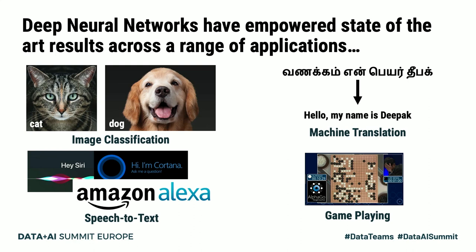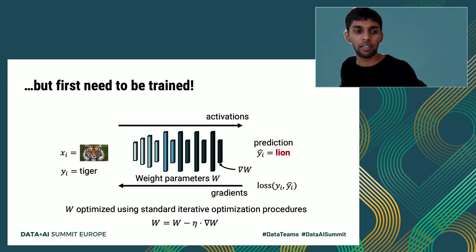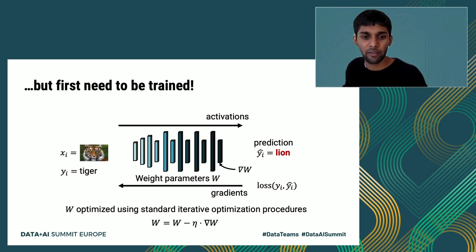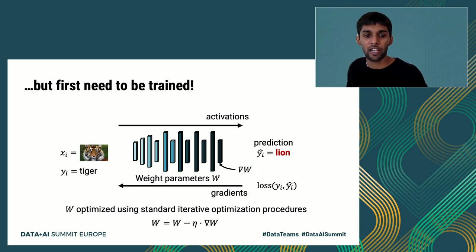Deep neural networks have empowered state-of-the-art results across a broad range of applications, such as image classification, machine translation, game playing, and speech-to-text. However, models need to be trained before they can be deployed. Training a DNN model at a high level involves finding weight parameters w that fit a training dataset, consisting of inputs and their corresponding labels.